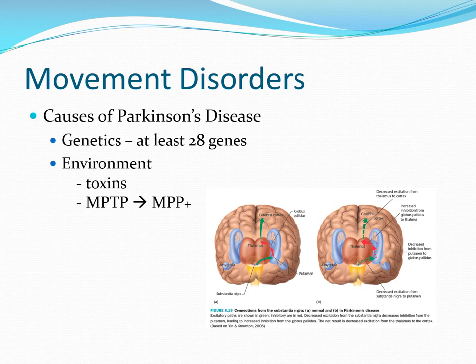Interestingly, there is a correlation where the more people smoke, the less likely they are to get Parkinson's disease. There is a balance between dopamine and other neurotransmitter systems, particularly between dopamine and acetylcholine. Since nicotine is an acetylcholine agonist, smoking apparently lessens the chance of getting Parkinson's. However, I would not recommend starting to smoke if Parkinson's runs in your family, since smoking is correlated with many other disorders and diseases — not just lung cancer but other conditions as well.